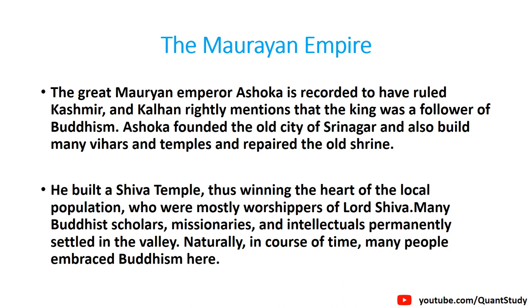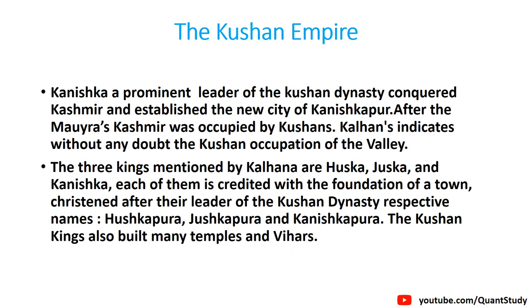अगला है हमारे पास कुशान Empire के rule में कश्मीर में तीन शहरों का निर्माण हुआ, जिनका नाम था हुशकापुरा, जुशकापुरा और कनिशकापुरा। ये तीनों शहर तीन राजाओं द्वारा बनाए गए थे, जिनका नाम था हुशका, जुशका और कनिशका। इनमें से सबसे महान नेता कनिशका थे, जिन्होंने कश्मीर को कॉन्कर किया और कुशान Empire को एस्टैब्लिश किया था। कुशान Empire के अंतर्गत कश्मीर में बहुत सारे मंदिरों का निर्माण हुआ और बौद्ध धर्म ने कश्मीर valley में अपनी पूरी शक्ति प्राप्त की।